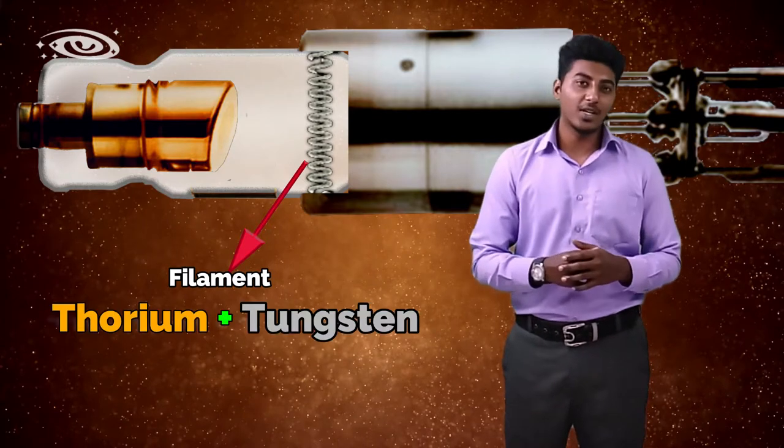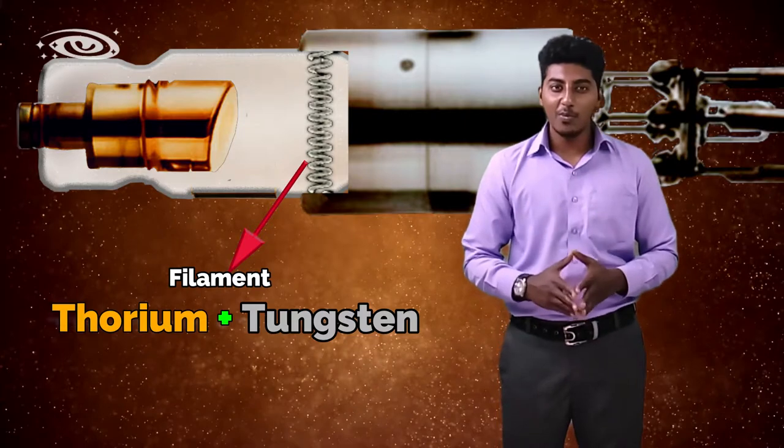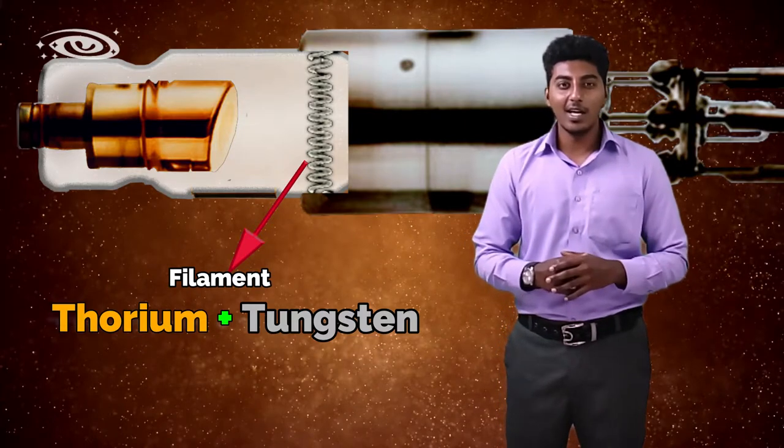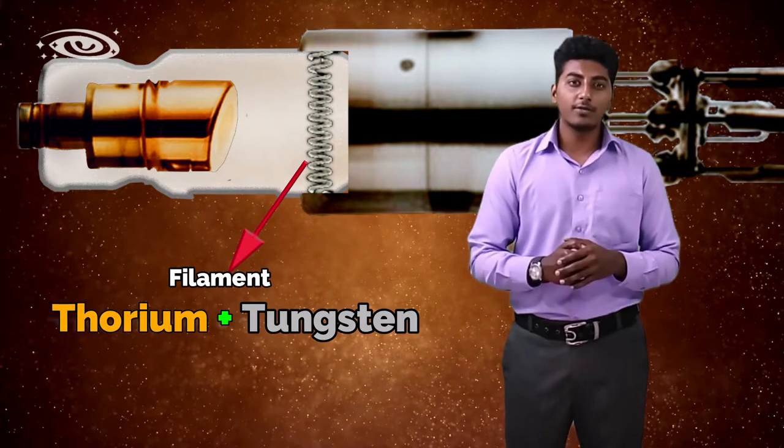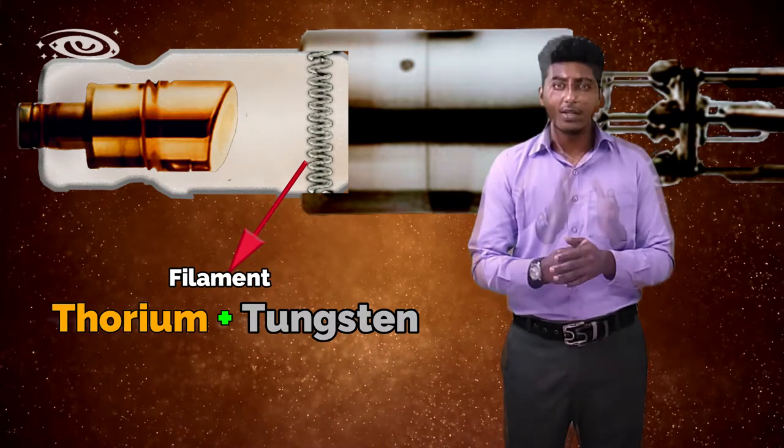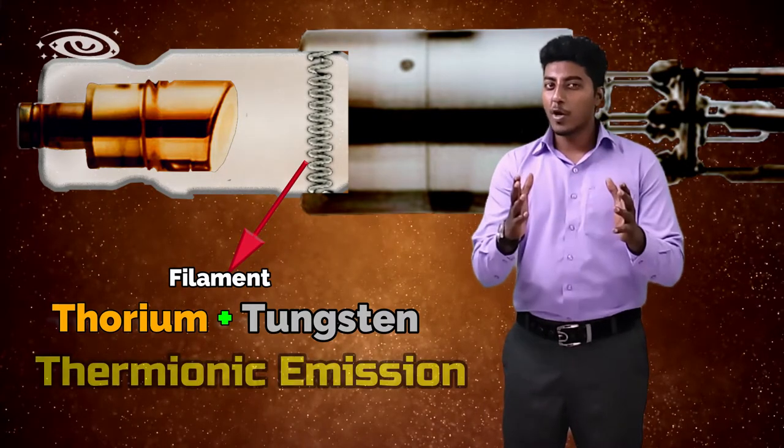The filament is made up of thoriated tungsten metal. The reason for using tungsten is it has a high melting point of 3370 degrees Celsius. One to two percent of thorium is added with tungsten because it increases the efficiency of thermionic emission.